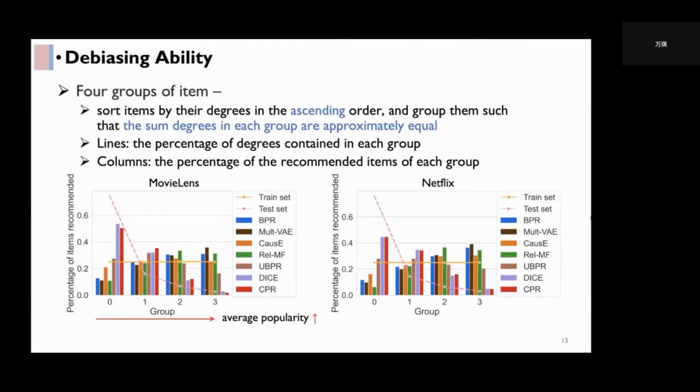Then we have a closer look at the debiasing ability of CPR. We divide all items into four groups by sorting them by their degrees in the ascending order and group them such that the sum degrees in each group are approximately equal. The lines of training set and testing set in the figures show the percentage of degrees contained in each group. And the columns of each method show the percentage of recommended items of each group. For the testing set, the percentage of recommended items decreases as the group ID increases, since popular items are downsampled in the testing set.